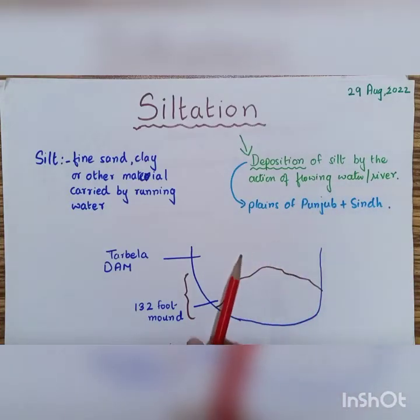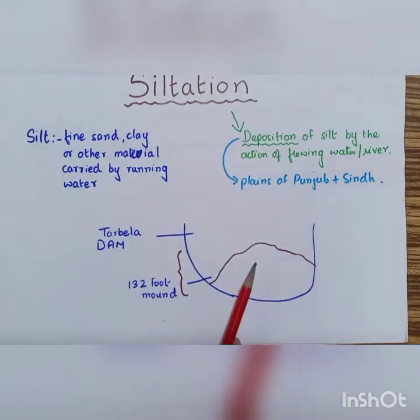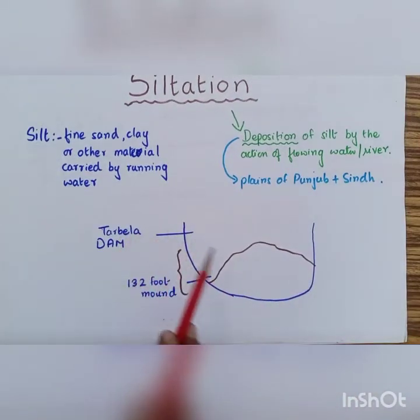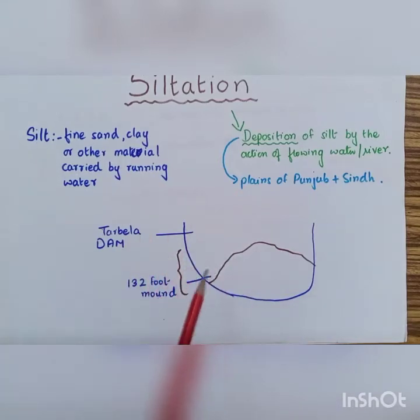Now what happens as a result of this siltation? I just drew a rough diagram. Imagine if this is the dam, the Tarbela dam. The deposition of silt gradually leads to the formation of mounds of silt which get deposited at the bottom because silt is heavy. This has led to the creation of a 132 foot mound in the Tarbela dam. Now, this causes a lot of problems and we'll be discussing these in a while.